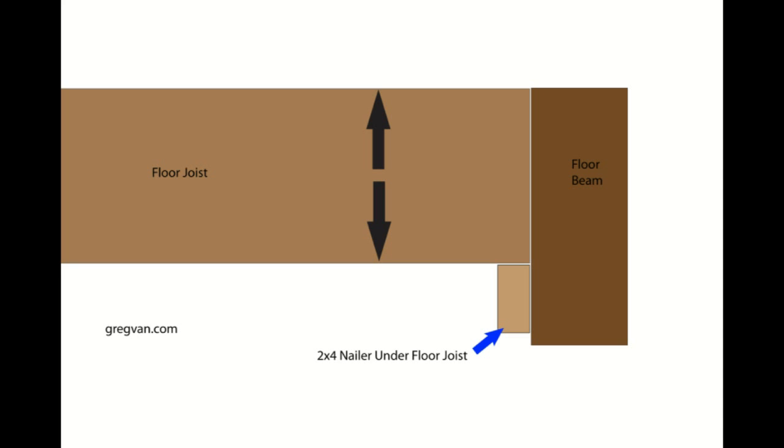For example, if it's a 2x12 floor joist and you have not notched the bottom, then you would be using the full width of the floor joist.